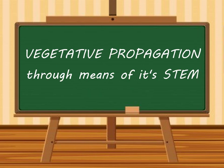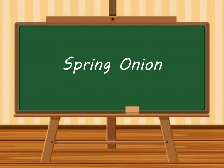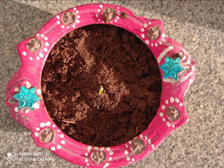Today we will be seeing an activity related to vegetative propagation through means of its stem. As we all know, spring onion is an example of a modified stem. What I have done is I have taken the topmost layer which had a little bit of green uprising in that spring onion, cut the topmost layer, and planted it in a pot.